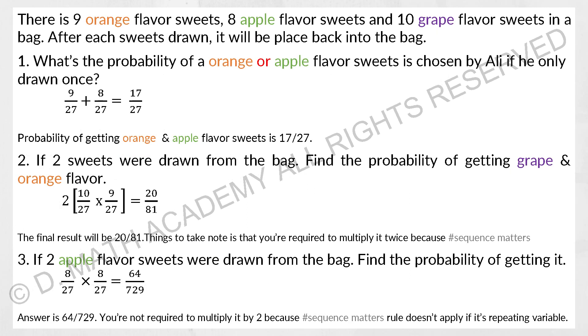And for the next one, the keyword of this question is actually after each sweet was drawn, it will be placed back into the bag. So you're not required to minus one at the denominator side after each drawn. What is the probability of orange or apple flavor sweets is chosen by Ali? The keyword here is or, so simply add nine with eight, divide by 27. So the probability will be 17 over 27.